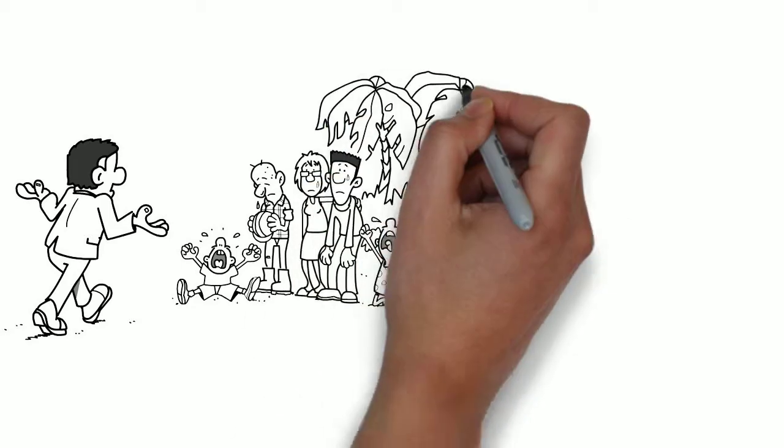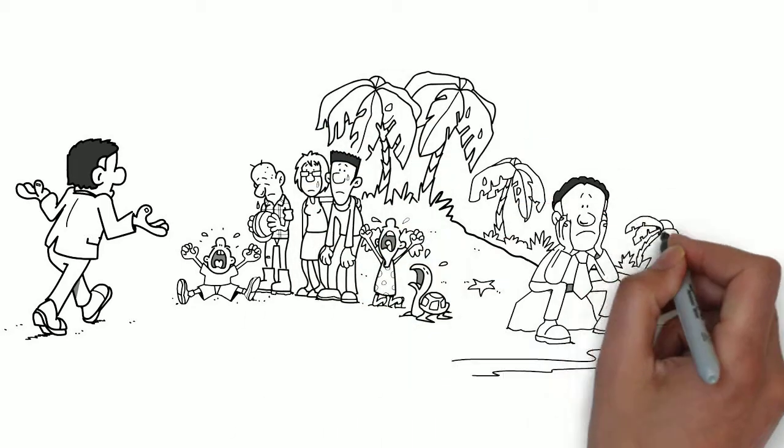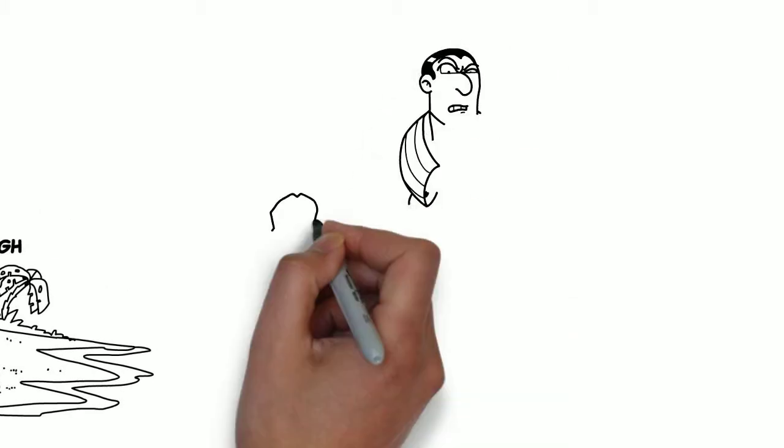He sat on the beach depressed and started thinking about how he could fulfill his dream. But John didn't give up that easily.